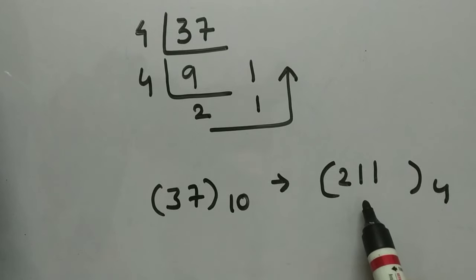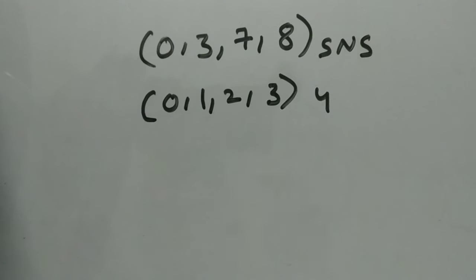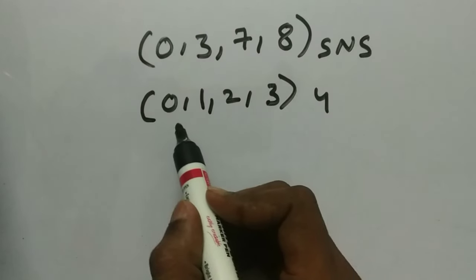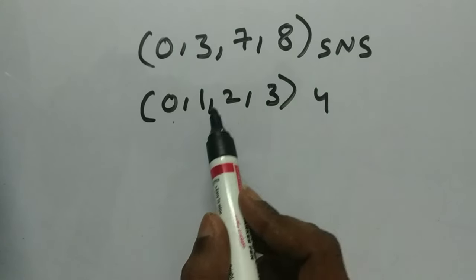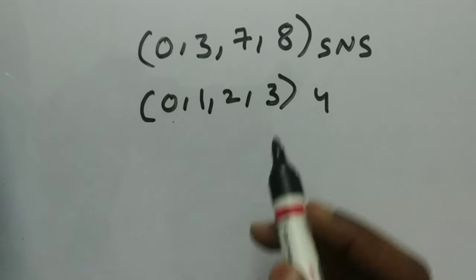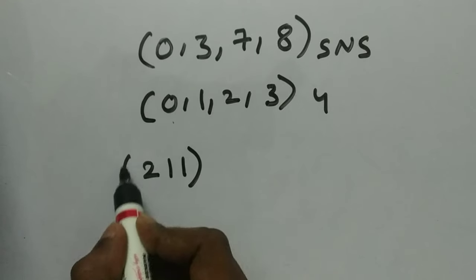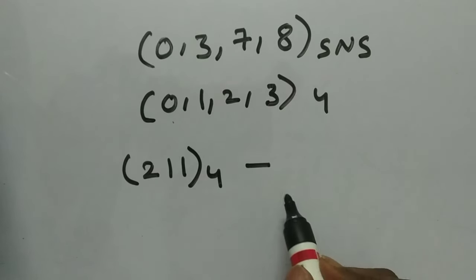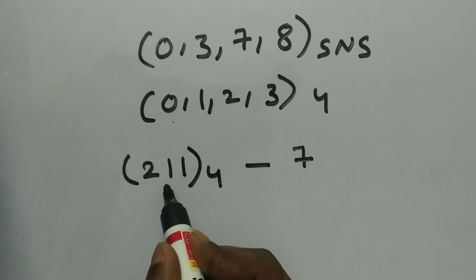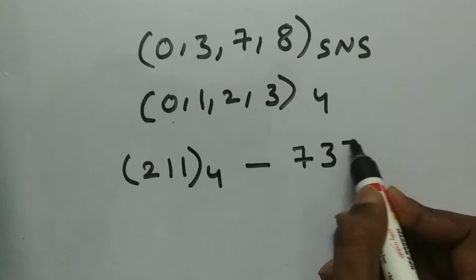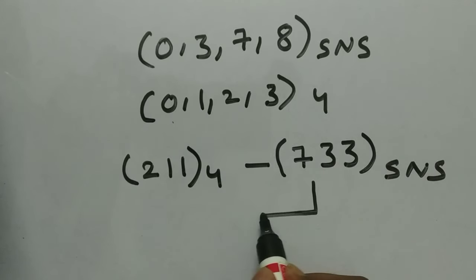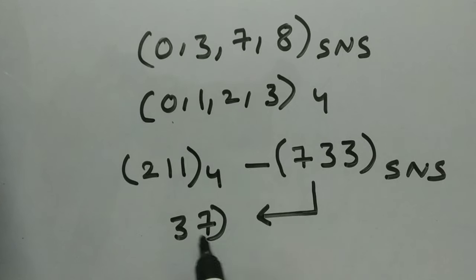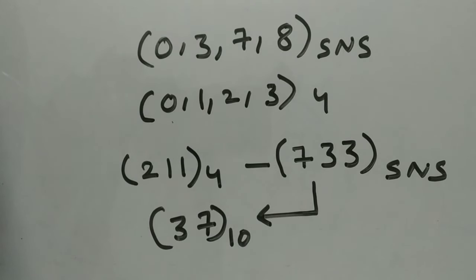Now we convert 211 in base 4 into the SNS number system. We know that 0 in base 4 represents 0 in SNS, 1 represents 3, 2 represents 7, and 3 represents 8. So for 2 1 1 in base 4: 2 is represented as 7 in SNS, and each 1 is represented as 3. So the answer is 7 3 3 in base SNS, which represents 37 in base 10.